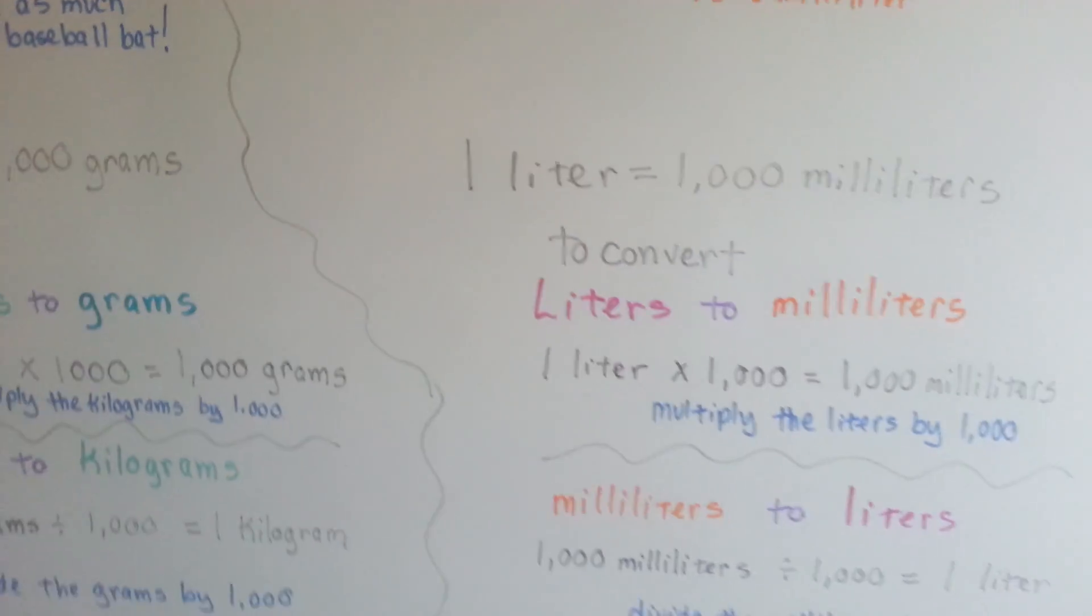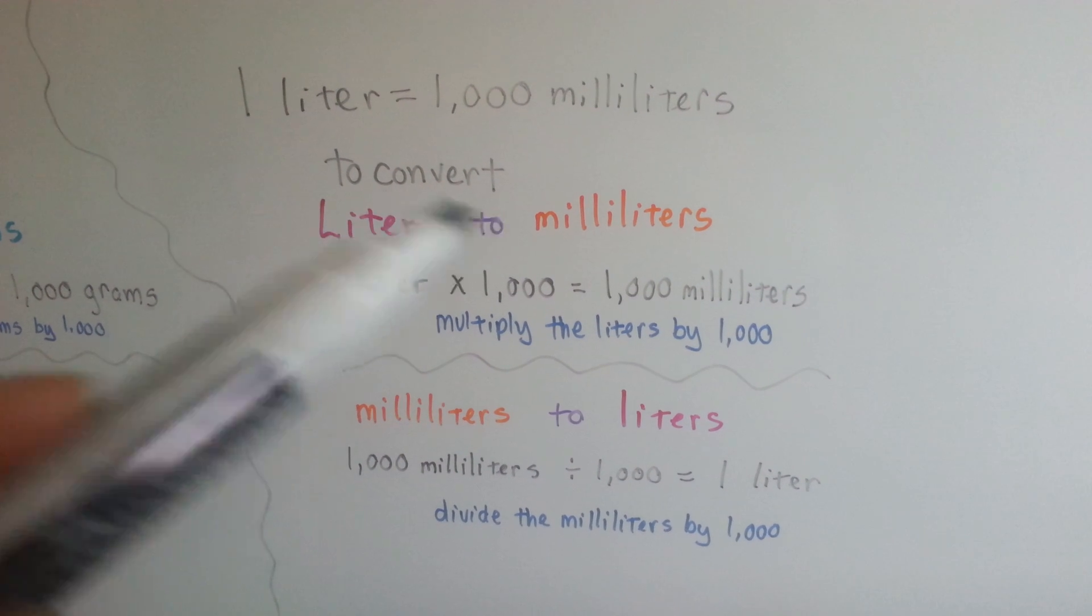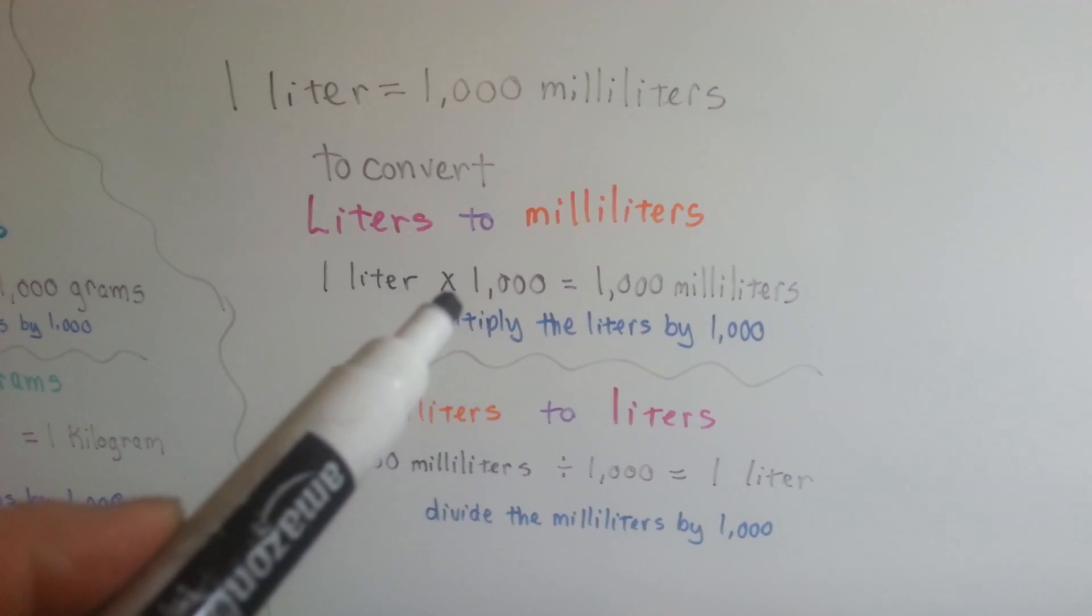You can do the same thing for liters and milliliters. We multiply or divide by a thousand. If you want to convert liters to milliliters, you multiply by a thousand.